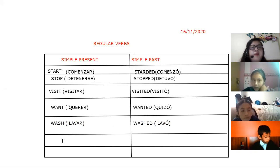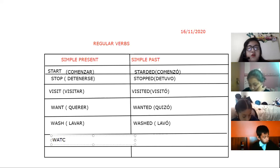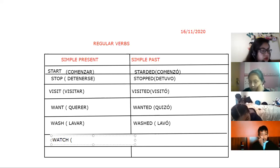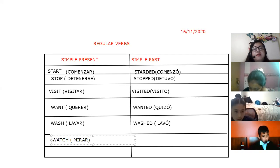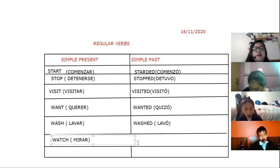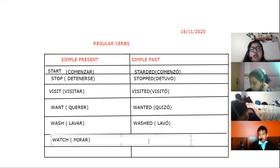Washed. Two more verbs. Agustín Piedra — we have watch. What is the meaning in Spanish of watch? For example: I watch TV. Watch it — don't forget the pronunciation: watch. Watch, with ED at the end, you must add ED: watched.